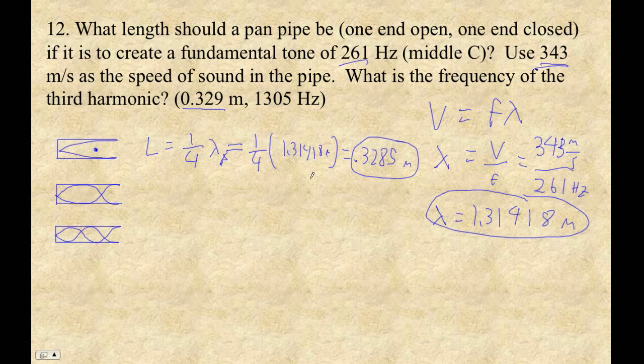And then what is the frequency of the third harmonic? Two ways you can do that. The simple way is that these things go F naught, 3F naught, 5F naught, and then it's all the odd things. So the third harmonic, one, two, three, would be five times that.